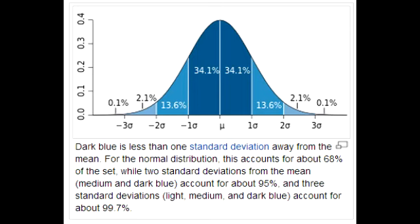The normal distribution is also called the bell-shaped or Gaussian curve, indicating mean, median, and mode are all equal. Sigma is the symbol for standard deviation; N depicts sample size. SEM equals standard deviation divided by the square root of sample size. As sample size increases, SEM decreases.